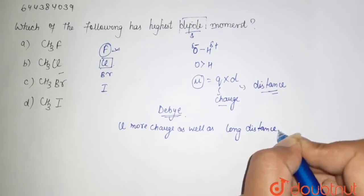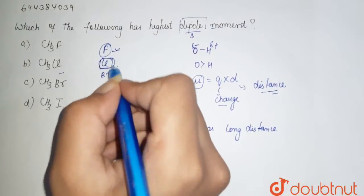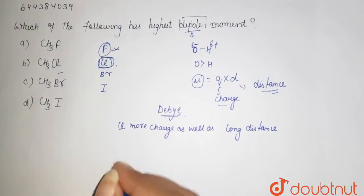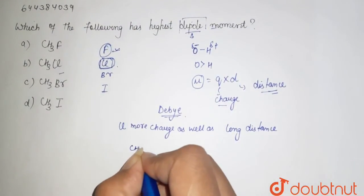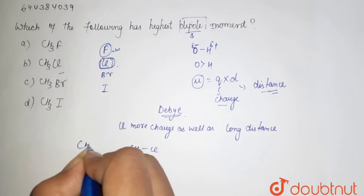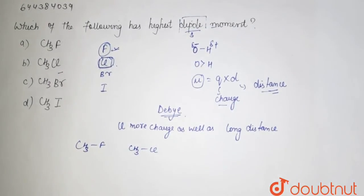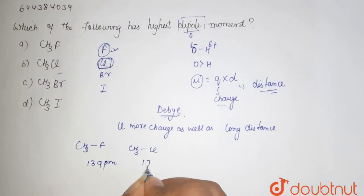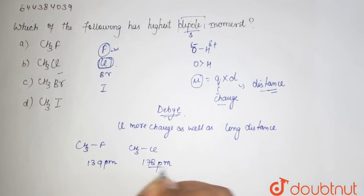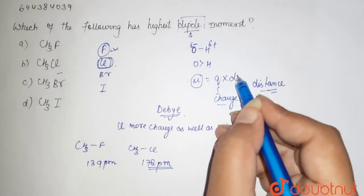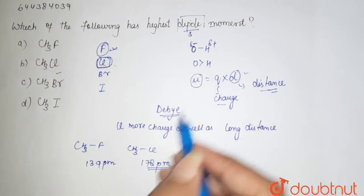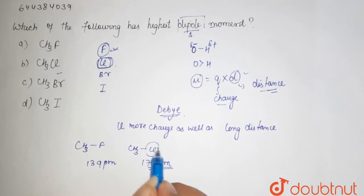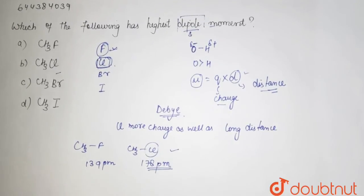Why so? Because it has much greater size than this. If I talk about the bond length of CS3Cl and CS3F, it is 139 picometer and 178 picometer. So according to this concept that mu is proportional to distance, that's why here charge is more as well as distance. That's why its dipole is maximum.